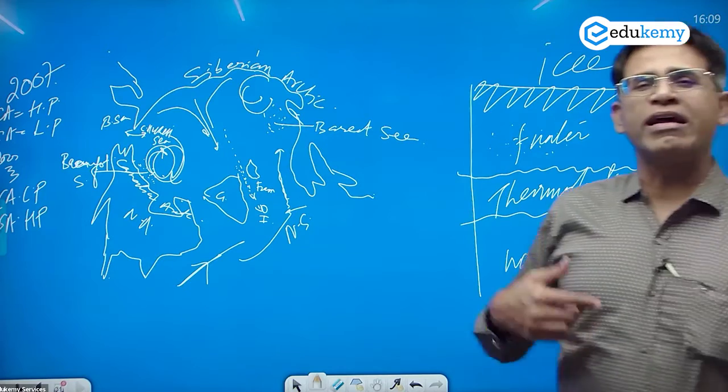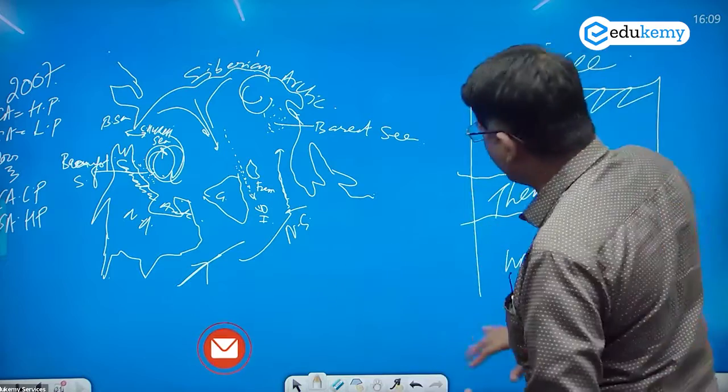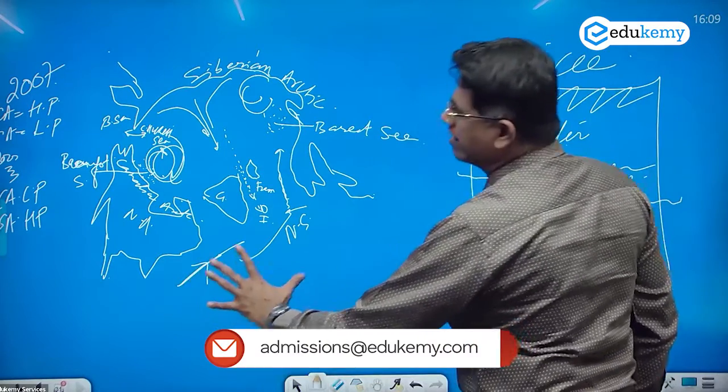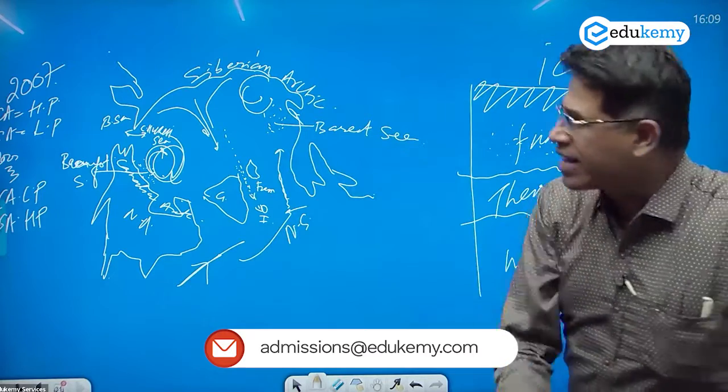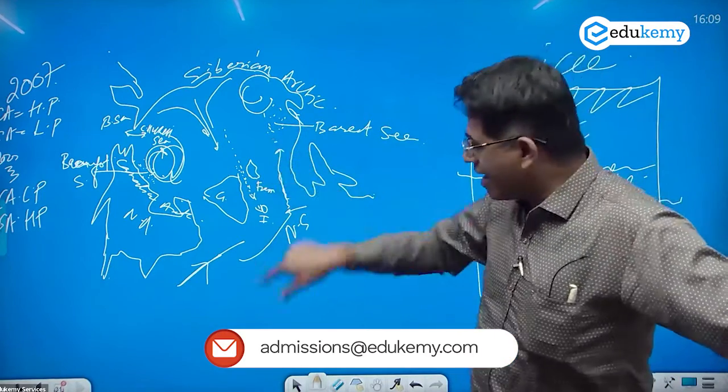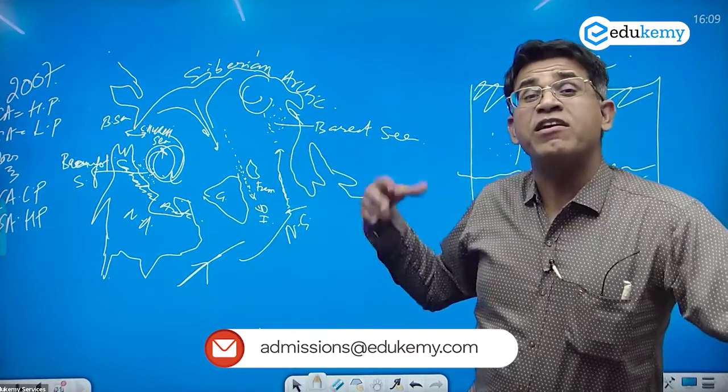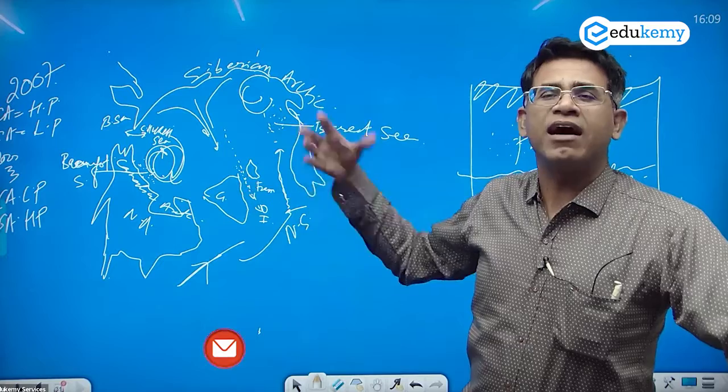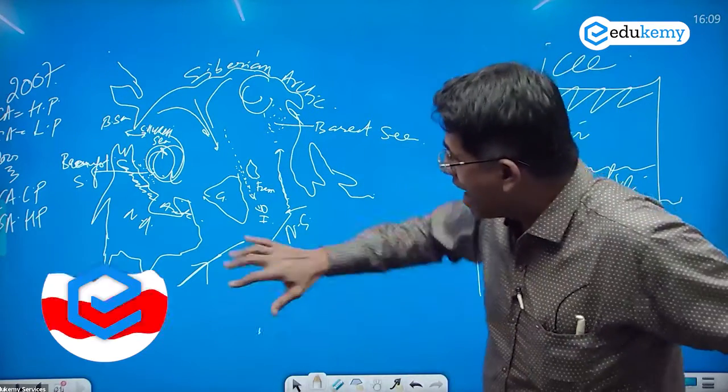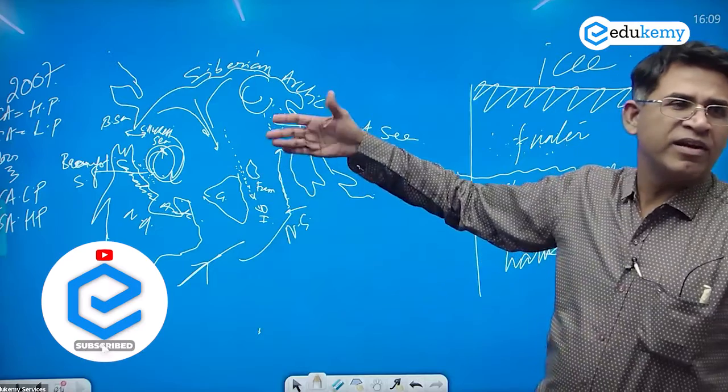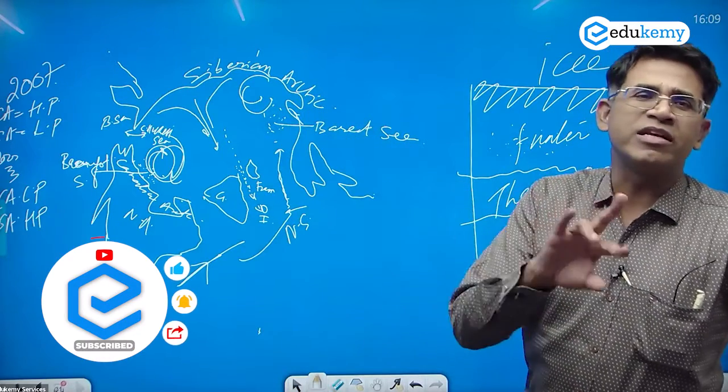And this saline waters of Atlantic entering in the Barents Sea. This is converting the Barents Sea like Atlantic ocean. This is called as Atlantification of the Barents Sea and the Arctic Sea. We have said tropicalization ho raha hai. We have said Atlantification ho raha hai of the Arctic seas and the Barents Sea.